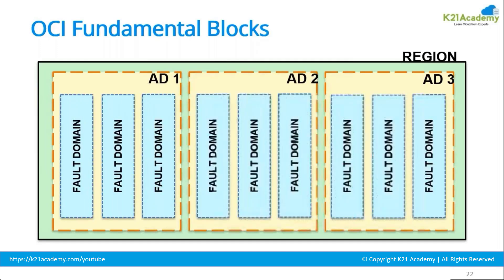Within these data centers you are going to see the fault domain. A fault domain is basically a logical data center within the data center. It has got a separate power supply and separate hardware, with no dependency. In case of a hardware issue, fault domains are used to recover your data. These fault domains are maintained and controlled by Oracle — you don't have any control over them from the console. Each availability domain has got three fault domains in it.